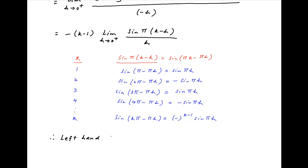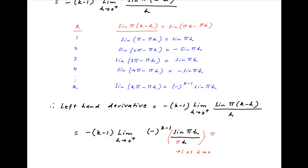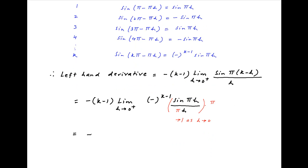Using this result, the left-hand derivative of f(x) at x = k equals −(k − 1) times the limit as h → 0⁺ of (−1)^(k−1)·sin(πh)/h. Multiplying and dividing by π, and noting that sin(πh)/(πh) → 1 as h → 0, the left-hand derivative equals −(k − 1)·(−1)^(k−1)·π, which simplifies to π·(k − 1)·(−1)^k, which is the required answer.